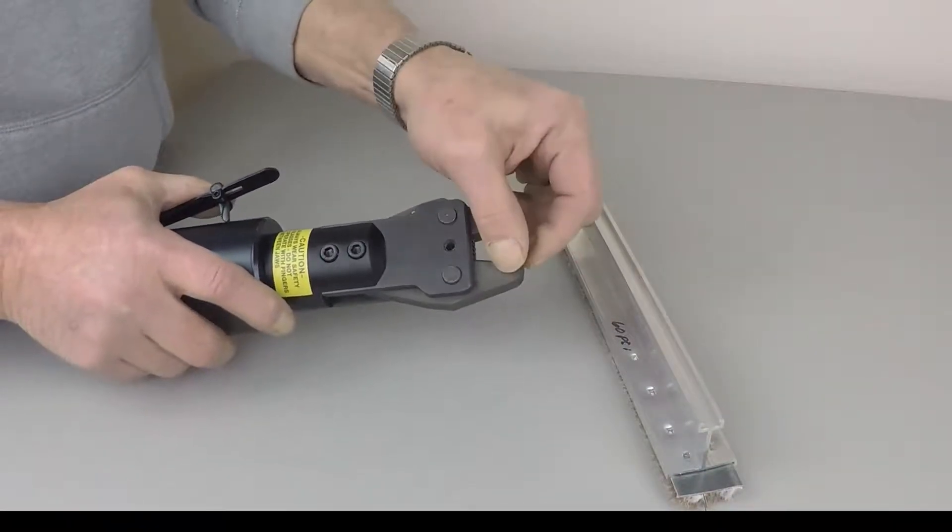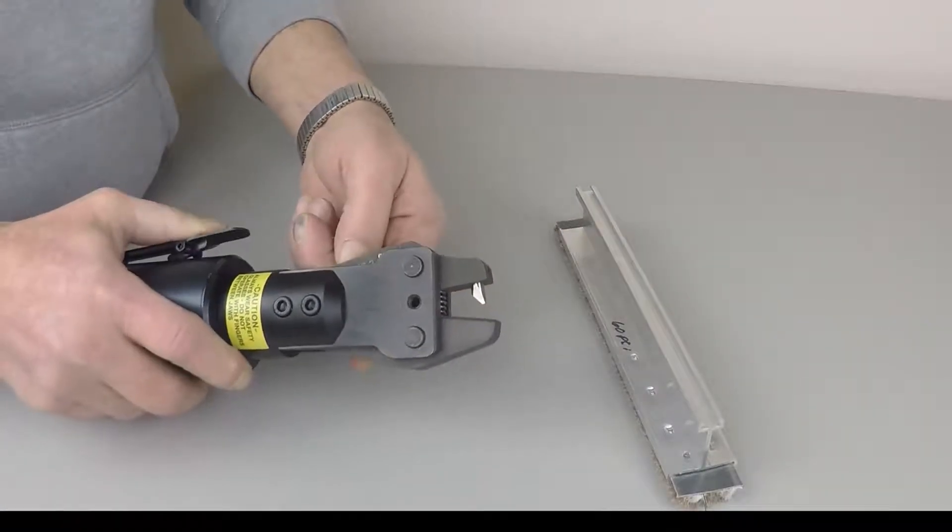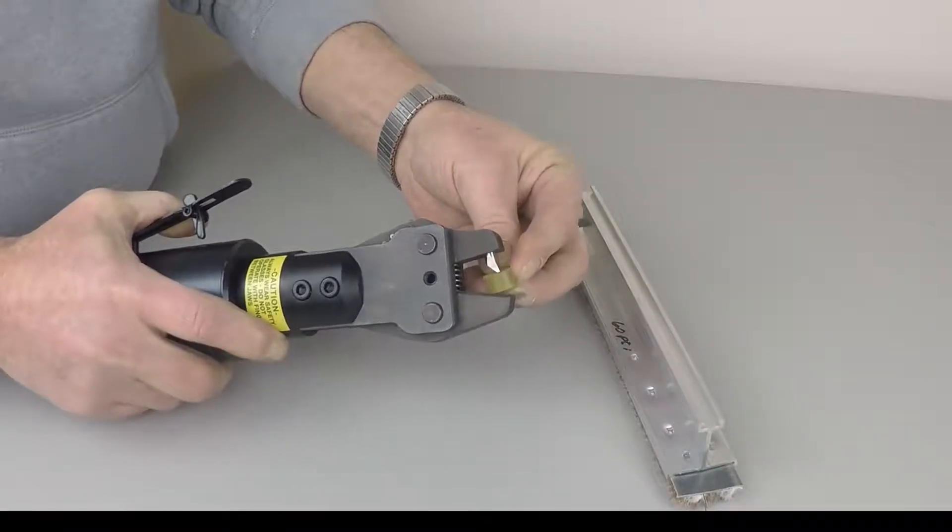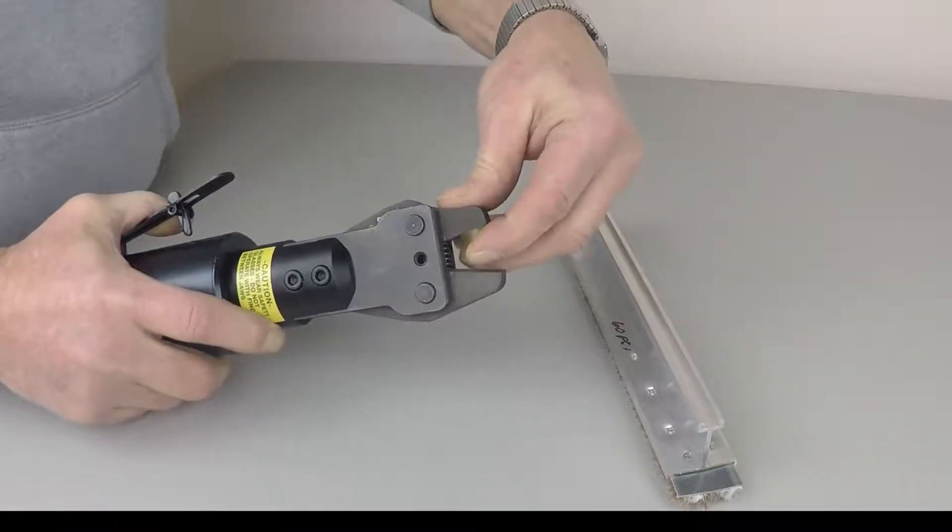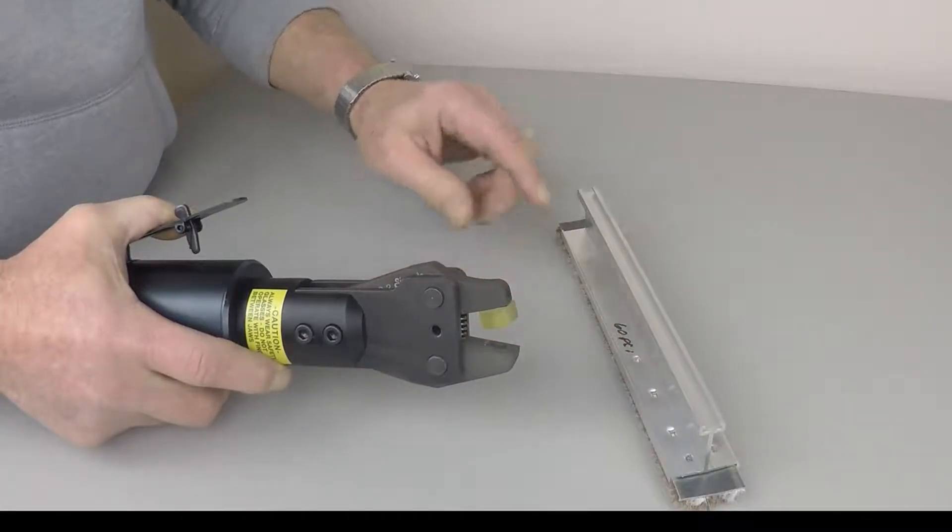So the tool was built with a punch and a die configuration. The pad here, this urethane pad, has been put in place to protect the aluminum extrusion and prevent it from being damaged or scratched during the process.